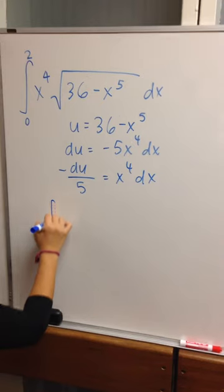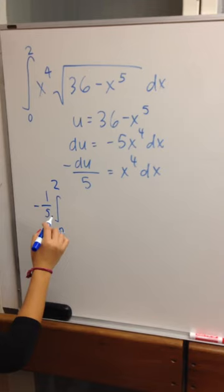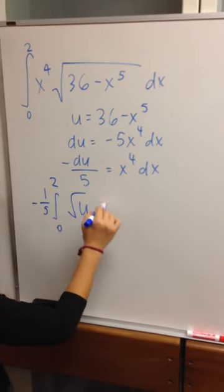So the new problem is negative 1 fifth integral from 0 to 2 of square root u times du.